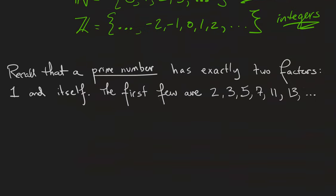So remember that a prime number is a number that has exactly two factors, one and itself. The first few prime numbers are 2, 3, 5, 7, 11, and 13.